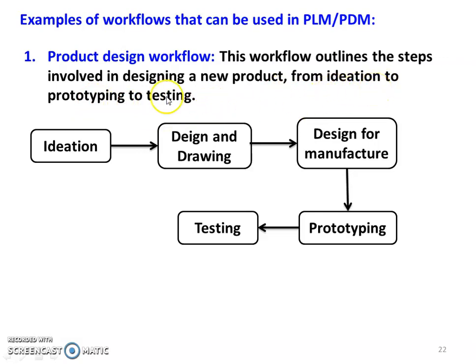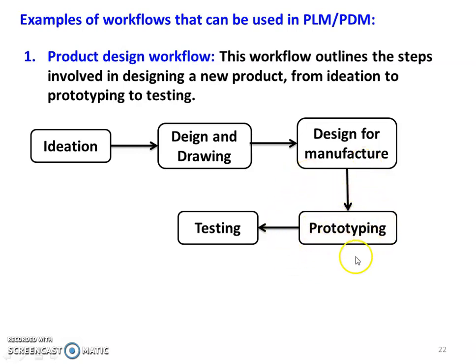Ideation is generating an idea about a new product. Once you have the idea, you proceed to design and drawing. After design and drawing, you prepare the design for manufacture — addressing manufacturing issues and modifying the design according to manufacturing requirements and availability. Then comes prototyping, where a single product is made based on the design, and that prototype is tested. This sequence — ideation to prototyping and testing — represents the design workflow steps.